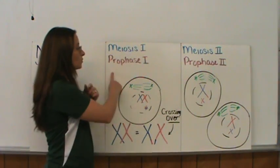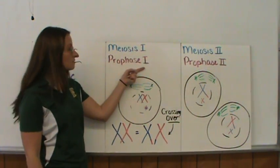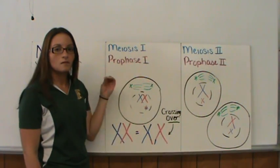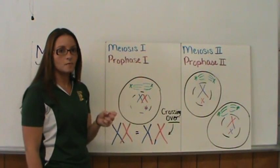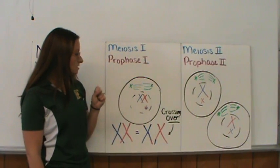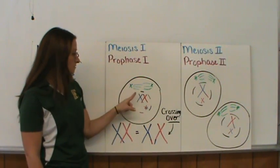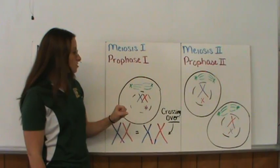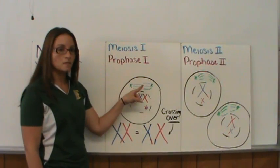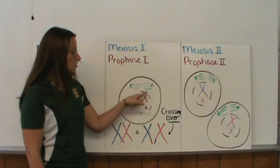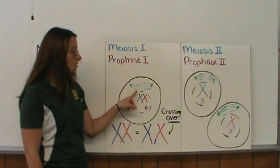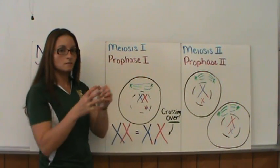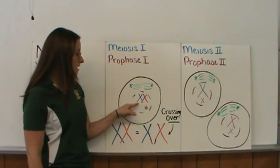Prophase I happens in meiosis I. Prophase I is very similar to prophase in mitosis; however, we have a difference in the chromosomes. Spindle fibers form, the nucleus dissolves, and the chromosomes condense from long strands into a tight chromosome.